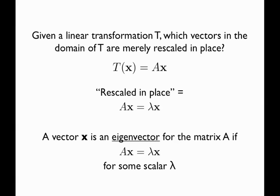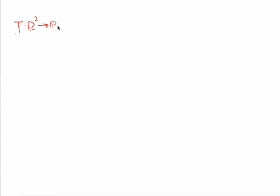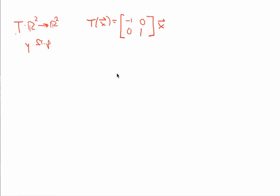For the rest of this screencast, we'll look at matrices representing linear transformations and ask whether certain vectors are eigenvectors. How we actually find eigenvectors is a subject for another screencast. Going back to the linear transformation that flips R² around the y-axis, we can think of it as multiplying by a matrix. The standard matrix is built from the images of the columns of the 2×2 identity matrix: the transformation of (1, 0) is (-1, 0), and the transformation of (0, 1) is (0, 1).